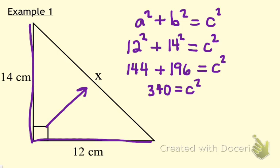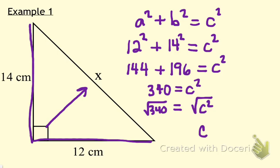In order to figure out what C is equal to, we need to take the square root of C squared. Remember, when we square root something, we're figuring out what number times itself equals that. So if I square root C squared, that'll equal C. This is an equation, so whatever I do on one side I do to the other. Since I square rooted C squared, I will square root 340. The square root of 340, rounded to the hundredths place, is equal to 18.44 centimeters.